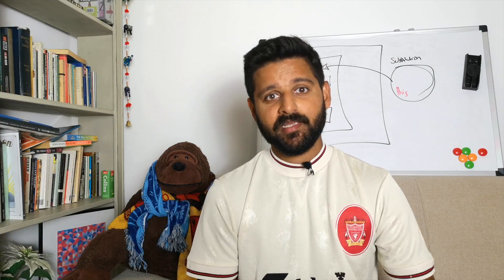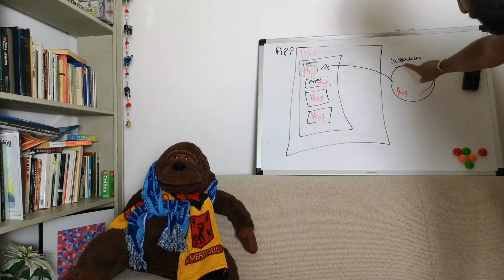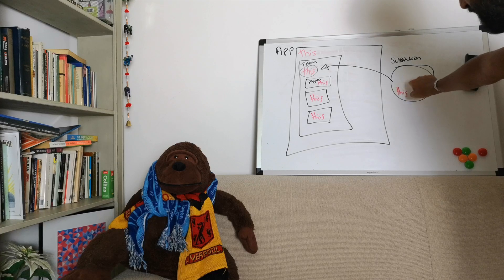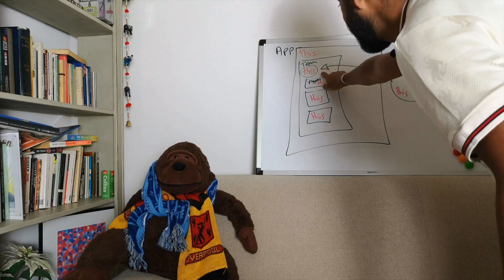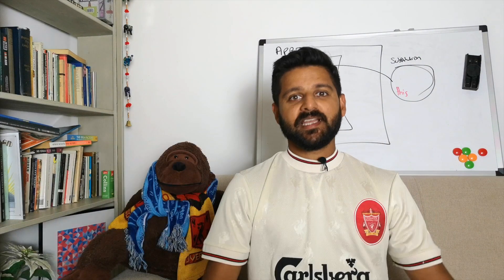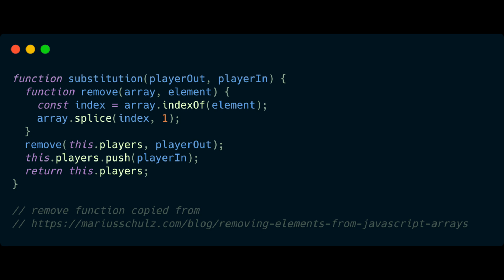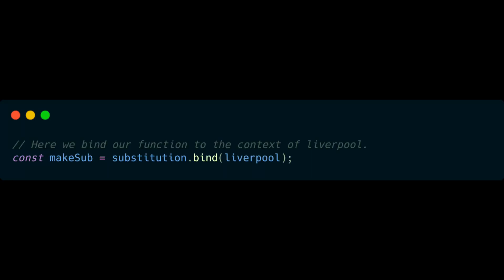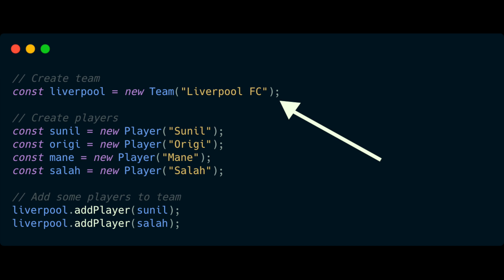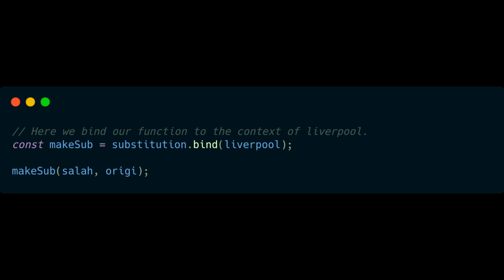The bind function takes one parameter, and that parameter is the context you want to use it in. Looking at the whiteboard, the substitution function has its own reference to `this`. What we want to do is change that by binding it to the team, so it understands the context it should be used in. On the screen you can see a new variable called `makeSub`, which is assigned to the substitution function with `.bind()` chained on the end, passing in the Liverpool variable as the `this` context.